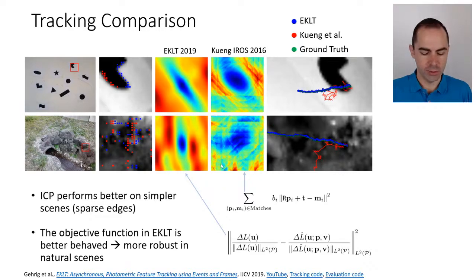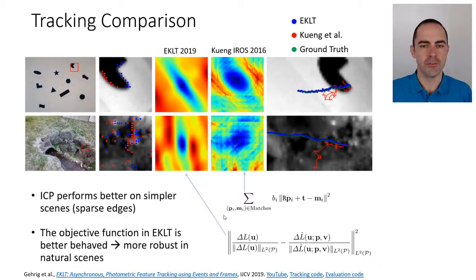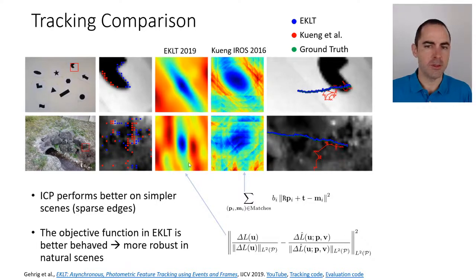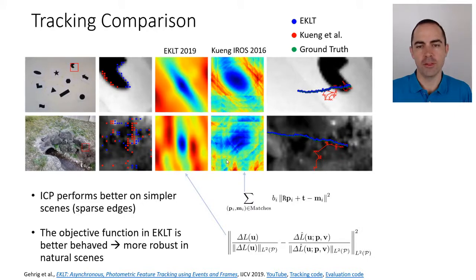The difference comes not only from hard versus soft data association, but also from the type of objective function being measured. If we want to optimize something, we would rather optimize functions that are smooth and have a clear minimum than functions that are not smooth and have many local minima.